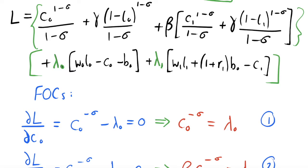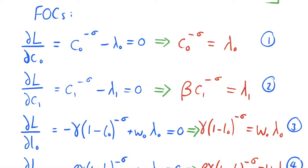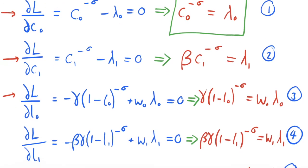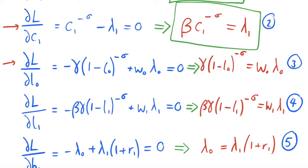We then take first-order conditions. There are five choice variables in this model: consumption in period zero, consumption in period one, labor in period zero, labor in period one, and b0 — how much the individual borrows or saves across periods. We differentiate with respect to each of these five variables, set them equal to zero, and rearrange each result. I've marked them equations one through five — those are our five first-order conditions.